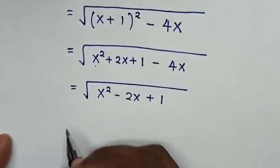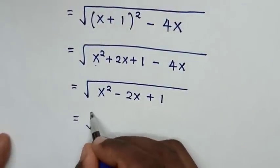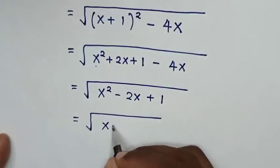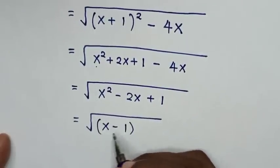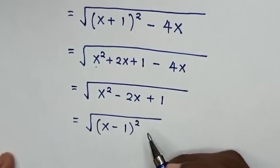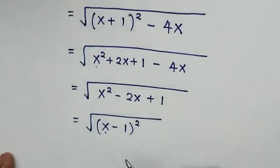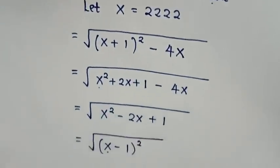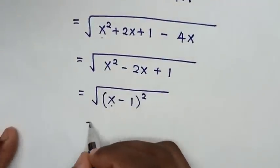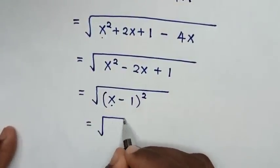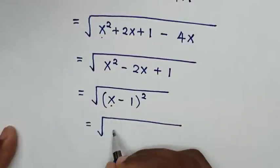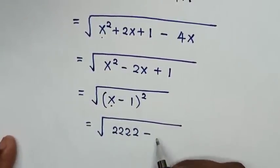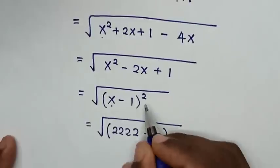Then, in the next step, it will be equal to square root of this quadratic equation, which is the same as (x minus 1) bracket squared. But before, we already let x is equal to 2222, so our expression will be equal to square root of (2222 minus 1) bracket squared.